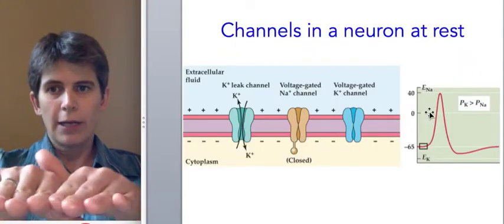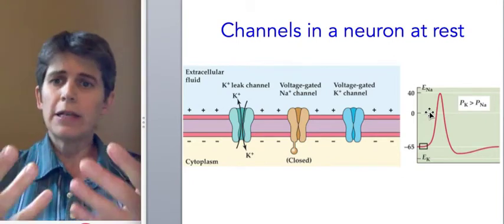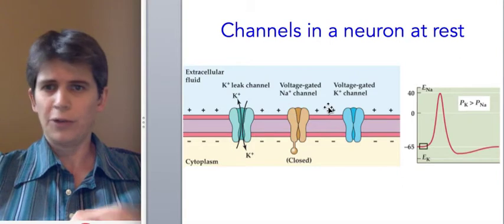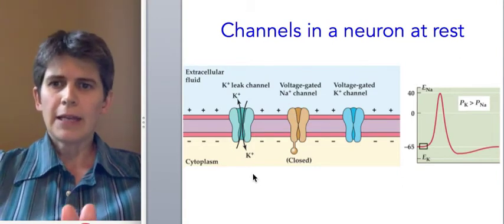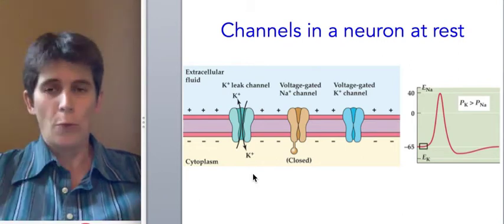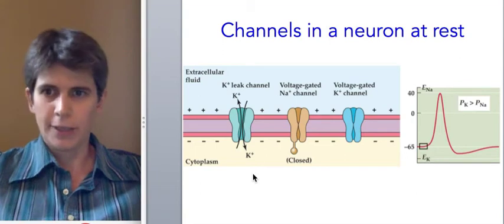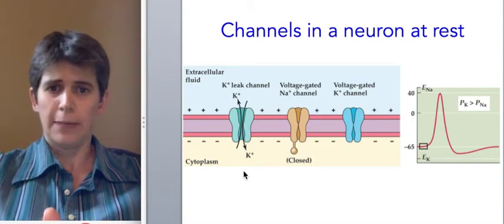So the only way we can get an action potential is because we've created these huge concentration gradients with the sodium-potassium pump. So in our axon here, at rest, we have three channels. Two of them are closed, and I'll talk about those in a minute. But one of them is open, and that is the potassium leak channel, and they're just called leak channels because they're open all the time, they're not gated. That is, they're always in one state, the open state that allows potassium to pass through them.